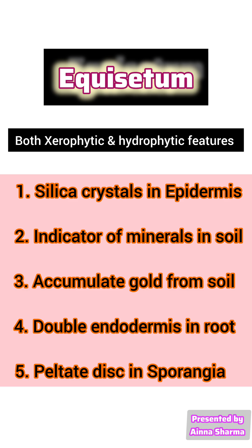Equisetum accumulates gold from the soil. There is presence of double endodermis in the root. The sporangia consists of a peltate disc, which is a hexagonal structure that helps in spore formation as it supports the sporangia.